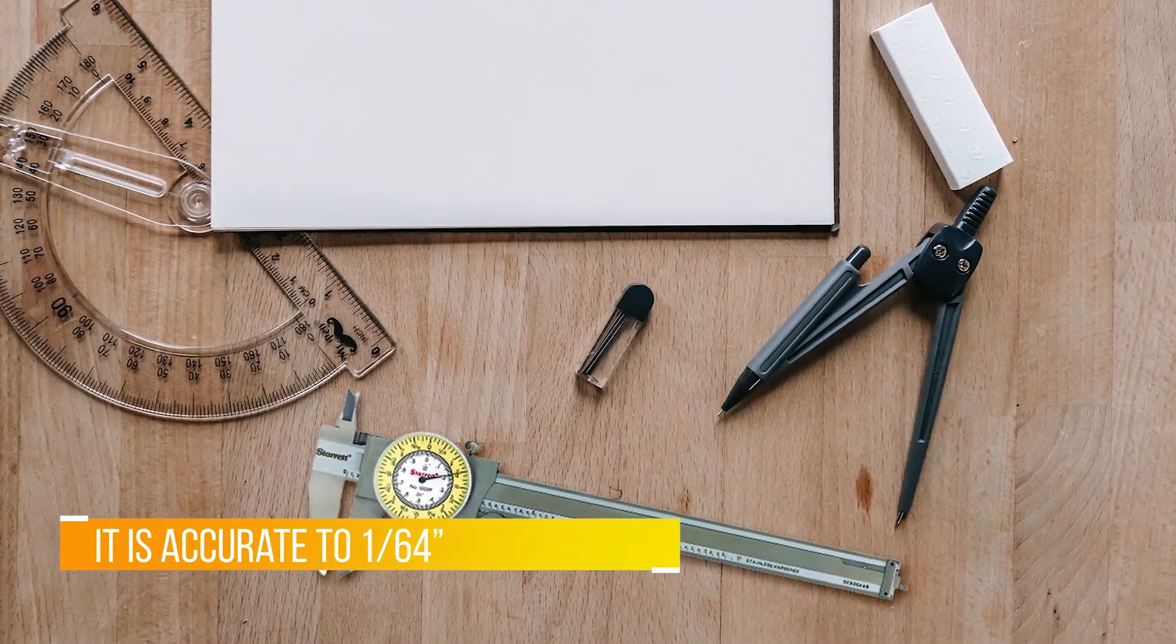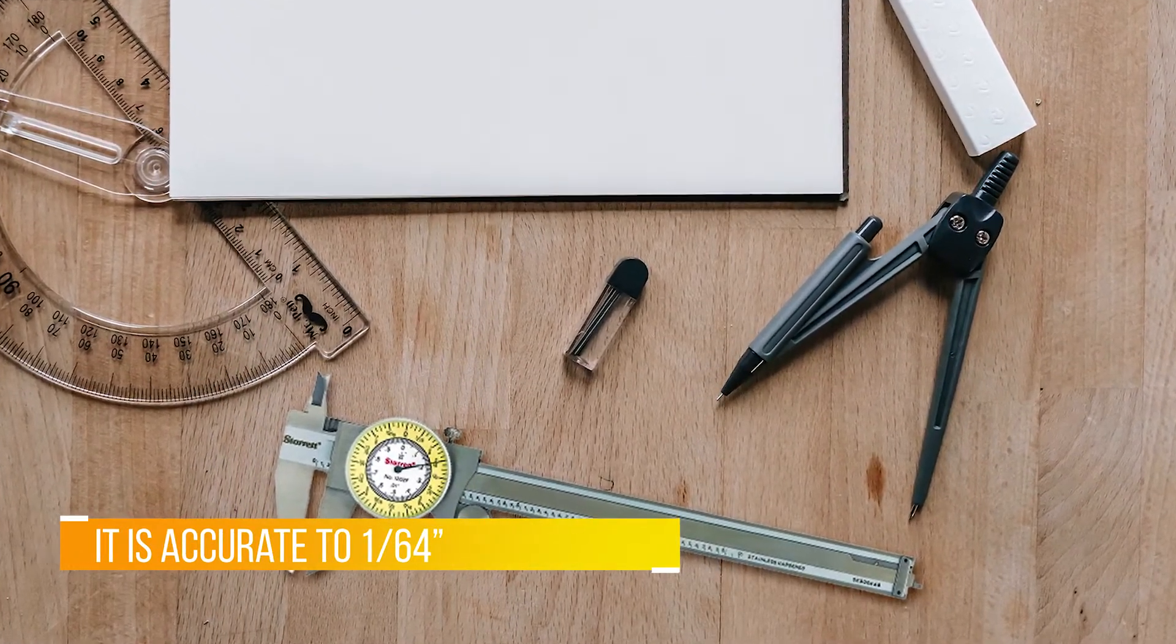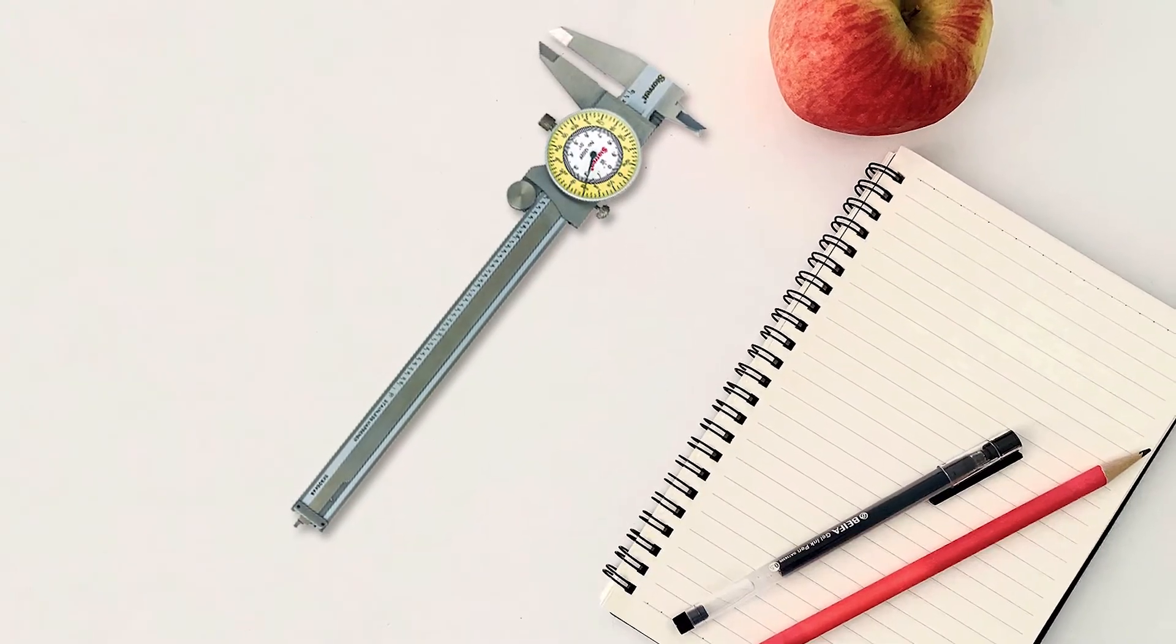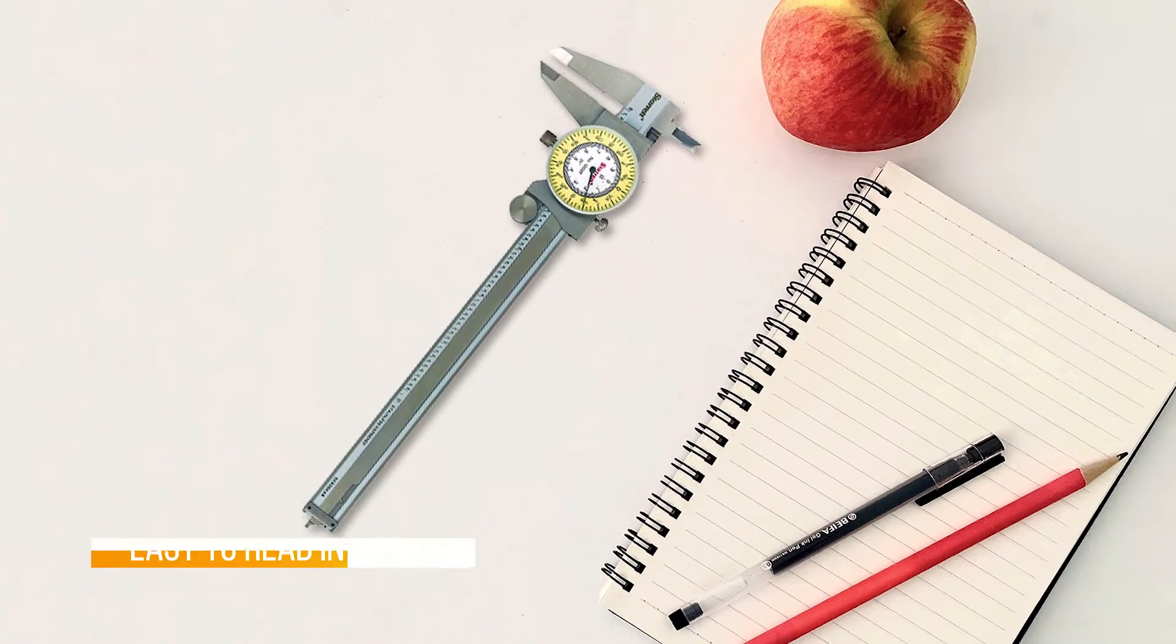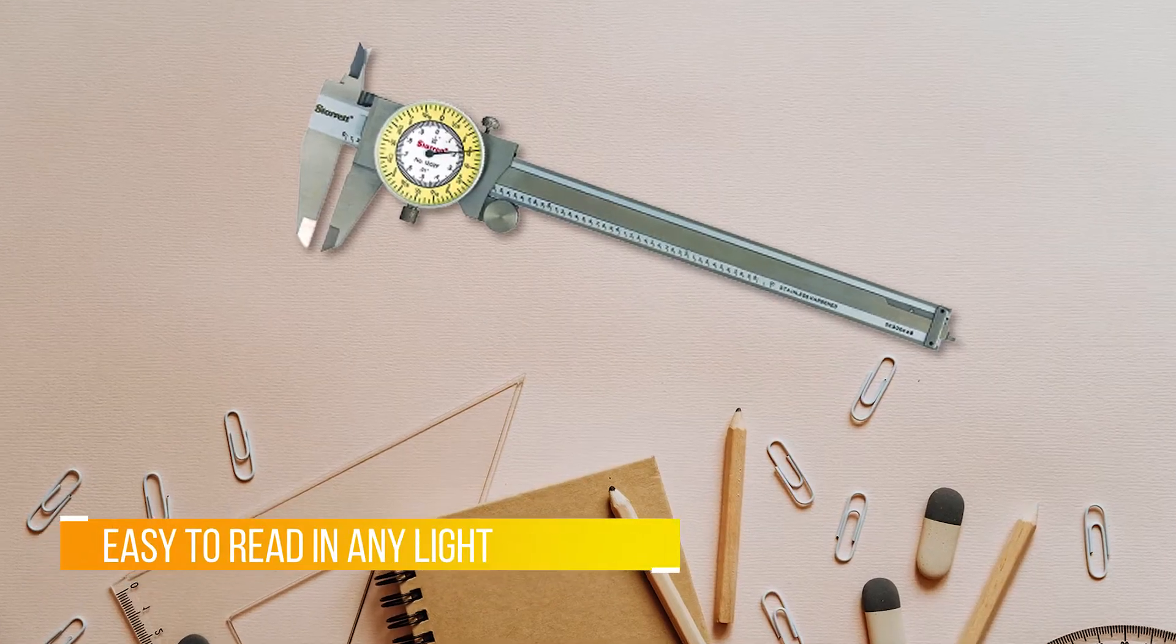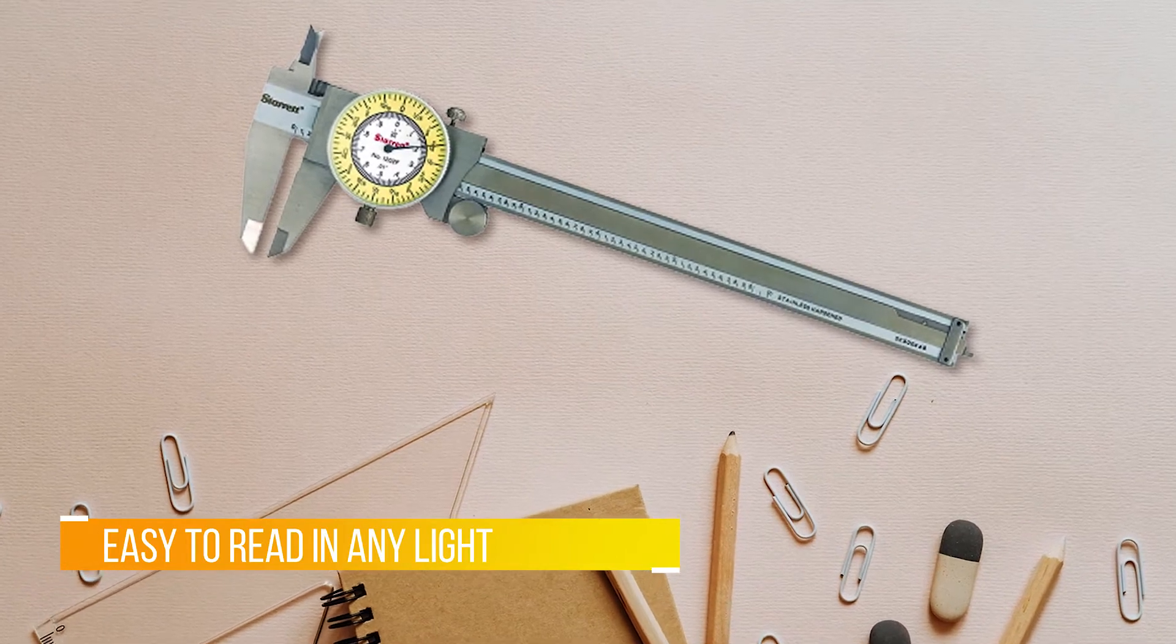The Stare-it measures OD, ID, depth, and steps using inches. It is accurate to 1/64th of an inch. The large white dial face on this caliper is easy to read in any light.